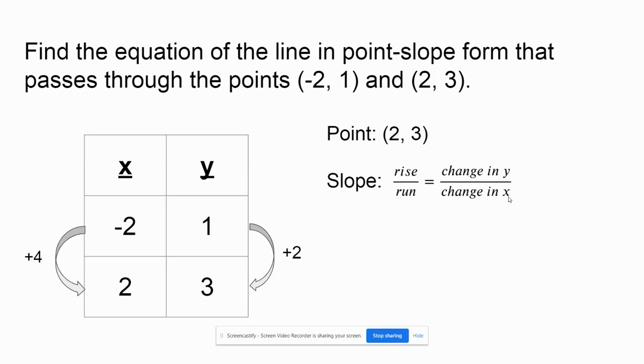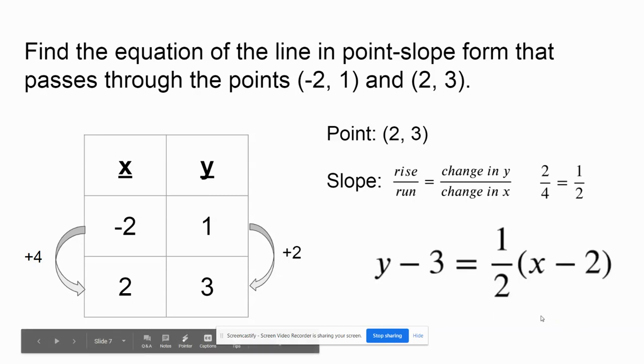Y is in the numerator. X is in the denominator. So I'll have 2 divided by 4, which will simplify to 1 half. Substituting in all of my information gives me y minus my value of 3 equals 1 half, which was my slope, times x minus 2.